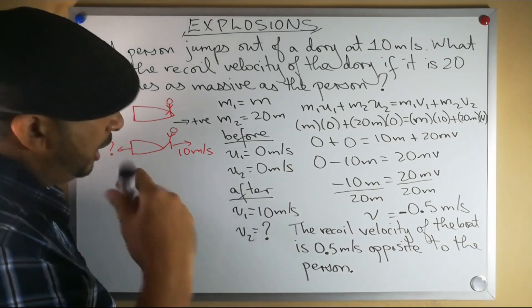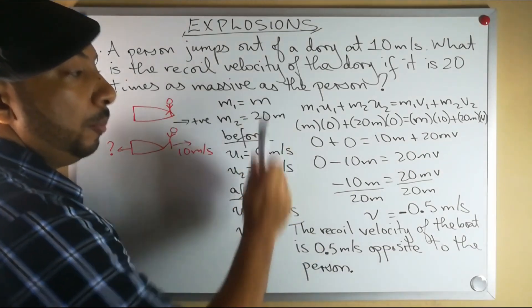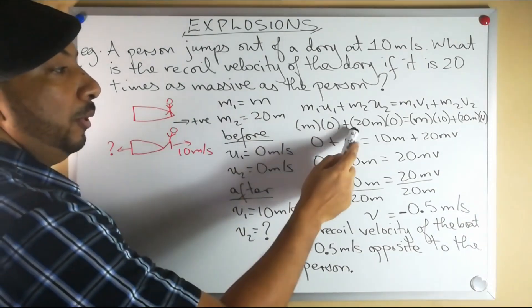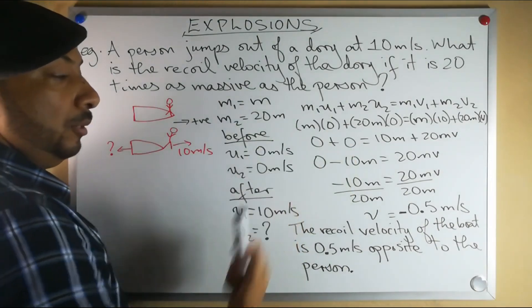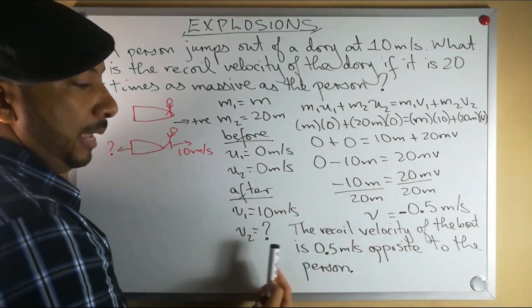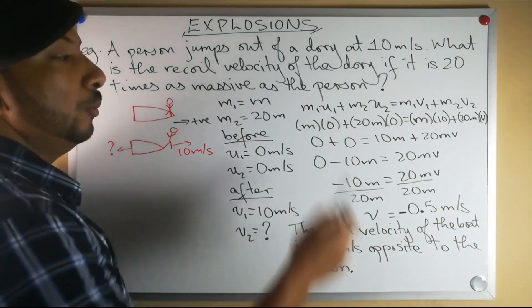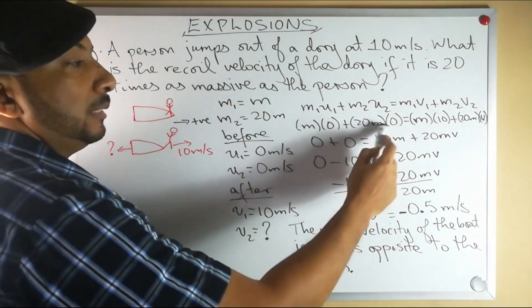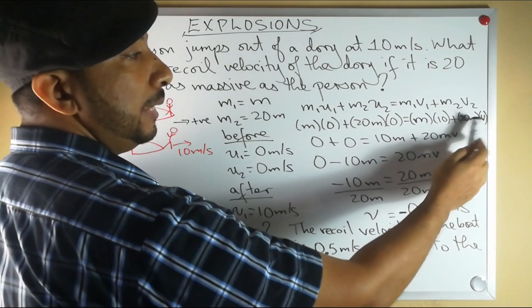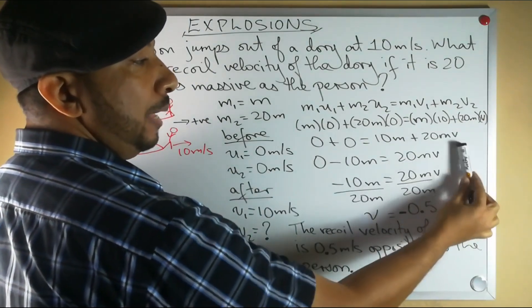What is the velocity of the dory? We don't know - that's what we're going to find. As always, we write down our formula and then we substitute. We'll have m times 0 plus 20m also times 0 equals m times 10 plus 20m times our unknown v. That's going to be 0, that's going to be 0, m times 10 is 10m, 20m times v is 20mv.